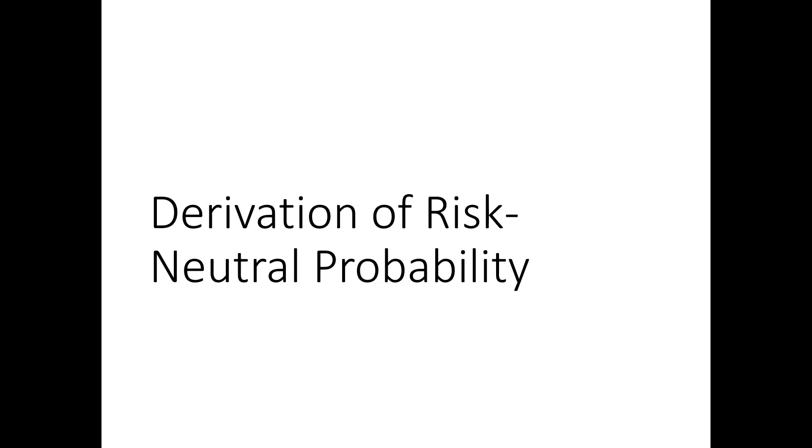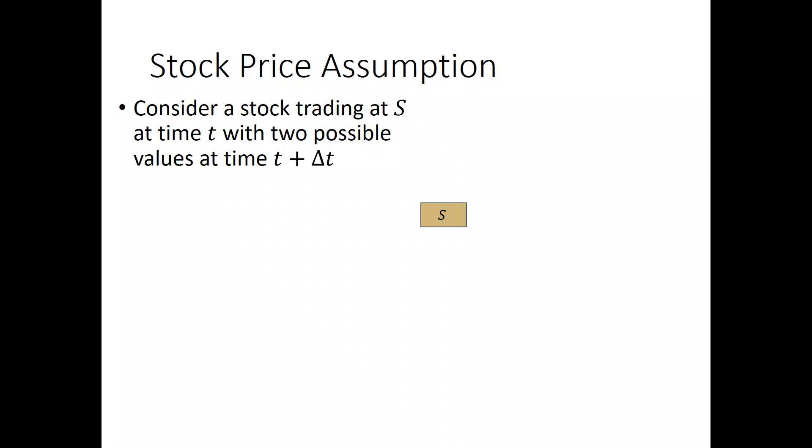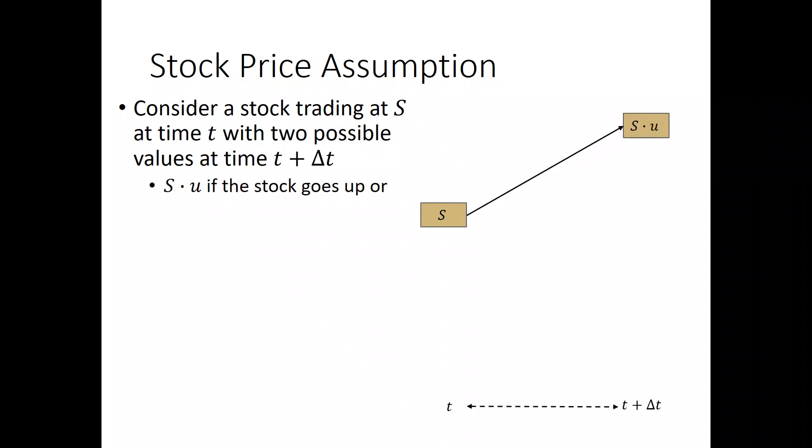In this video, I derive the risk-neutral probability for a binomial tree. We make an assumption about the stock price. Consider a stock trading at s at time t with two possible values at time t plus delta t. If the stock goes up, we call that value s times u, where u is generally bigger than 1. And if the stock goes down, we call that s times d, with d generally less than 1.